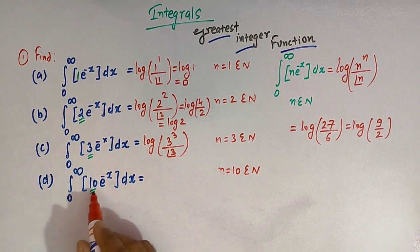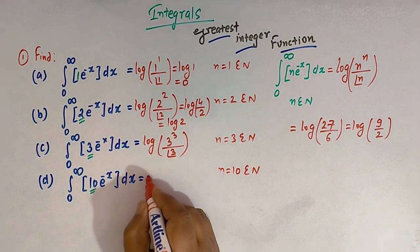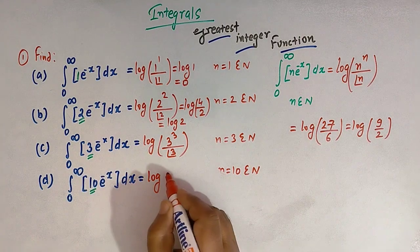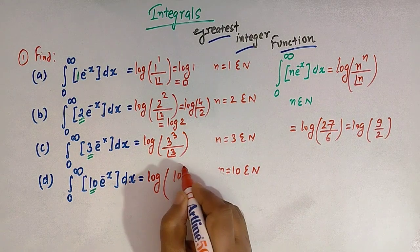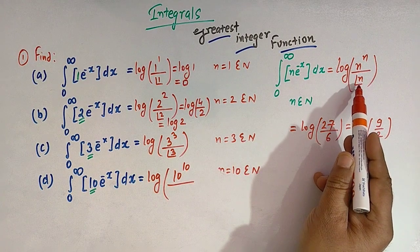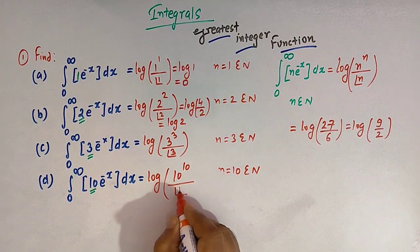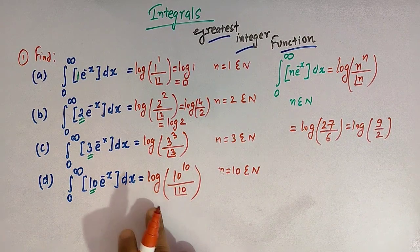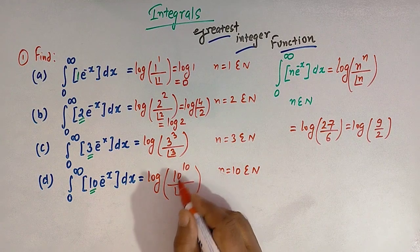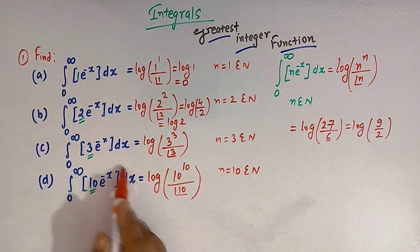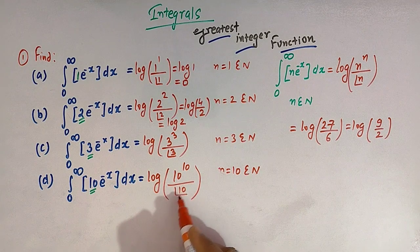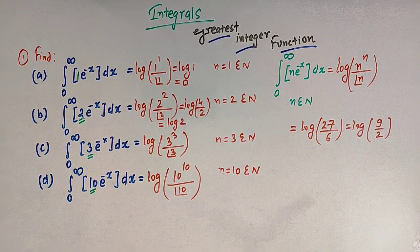Similarly, for the fourth integral, n equals 10, so the value is log of 10 raised to 10 divided by factorial of 10. Since these are very large numbers, we leave the result as log of 10 raised to 10 divided by factorial of 10.